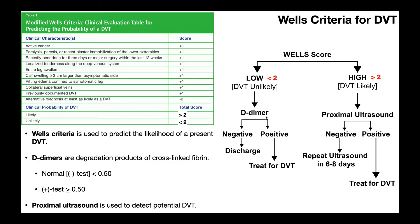You order a D-dimer test to help rule up or rule down a DVT. If the D-dimer is less than 0.5, it's a negative test, meaning the person probably does not have a deep vein thrombosis. But if the D-dimer is positive — meaning the value is at least 0.5 — then the person probably does have a DVT and you should treat them as such. Two common treatments are anticoagulants and compression wraps for the lower extremity, usually used in conjunction with each other.